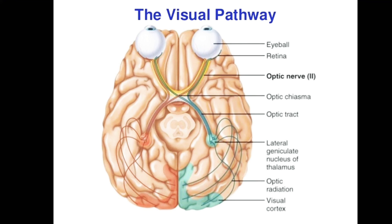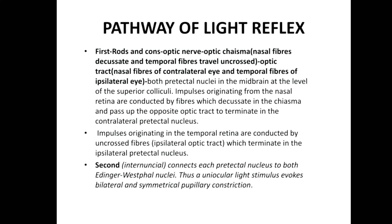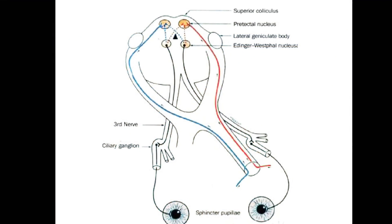In the midbrain there is the pretectal nucleus. From the pretectal nucleus, the impulse travels to another set of nuclei known as the Edinger-Westphal nucleus. Importantly, from the pretectal nucleus the impulse travels to both-sided Edinger-Westphal nuclei. This bilateral impulse is responsible for the constriction of both pupils when we are shining a torchlight in front of just one eye.